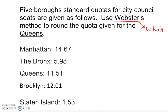Now, we are rounding for which one? We are rounding for Queens. They already limited our discussion, so it's less work. And also, the standard quotas are already given. So we're going to just use the Webster method. Which one is Queens? If you look in here, that is Queens. The Queens quota is given as 11.51.